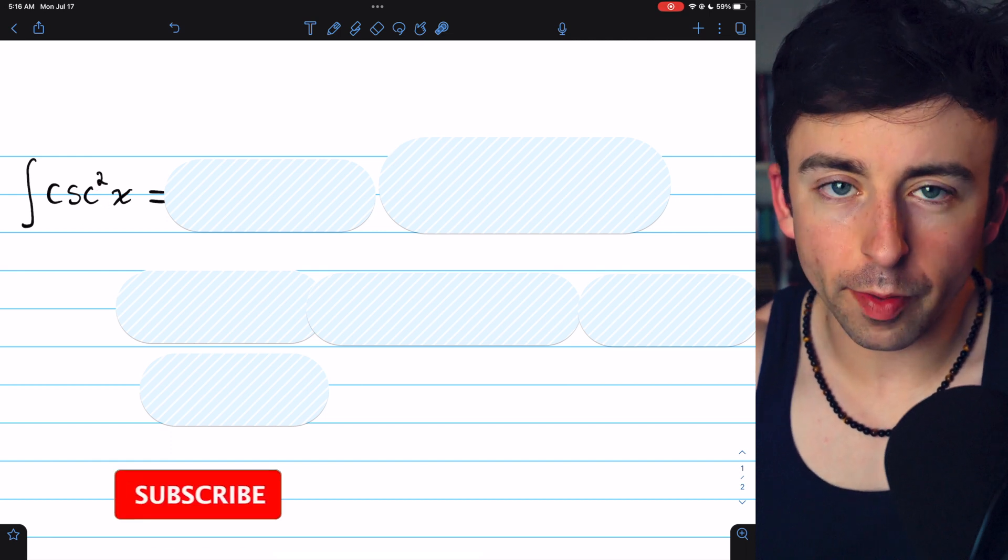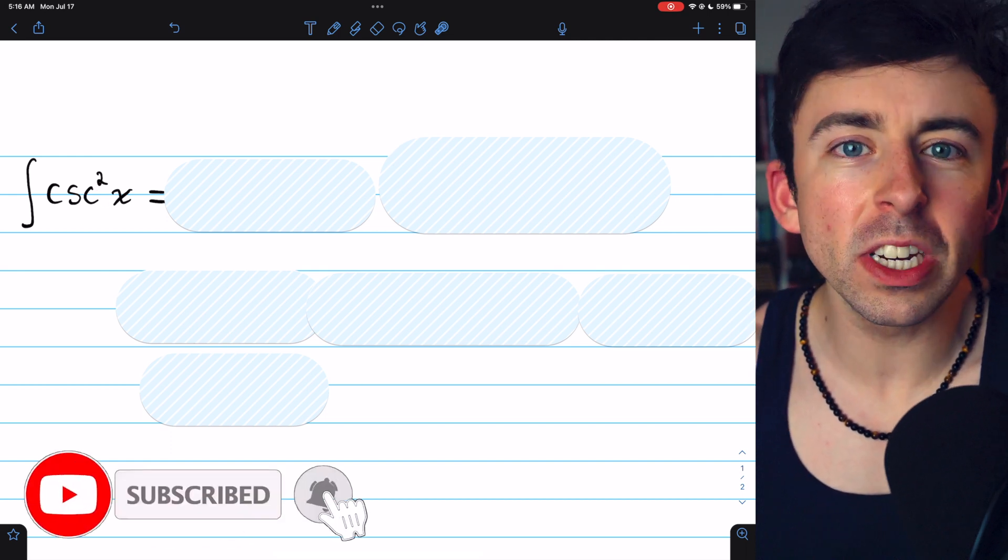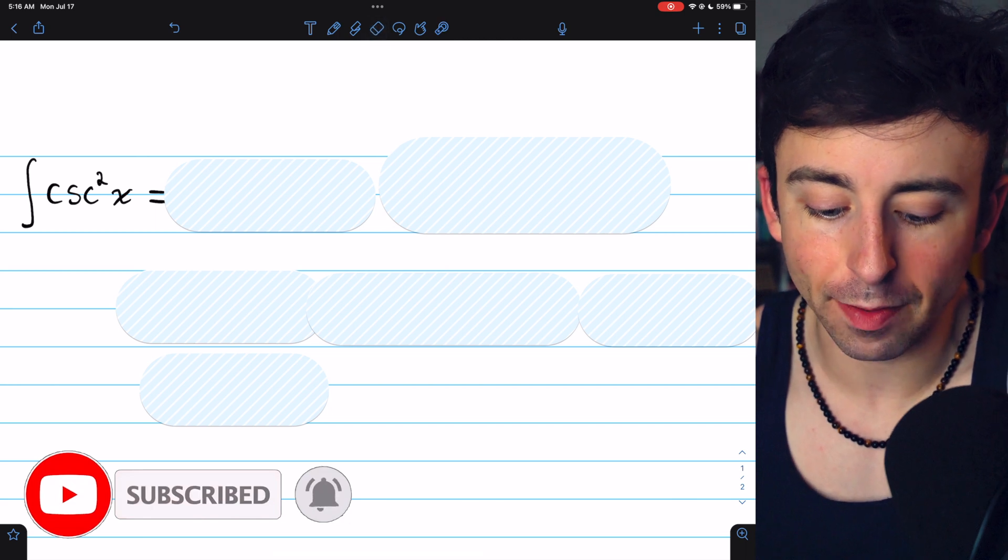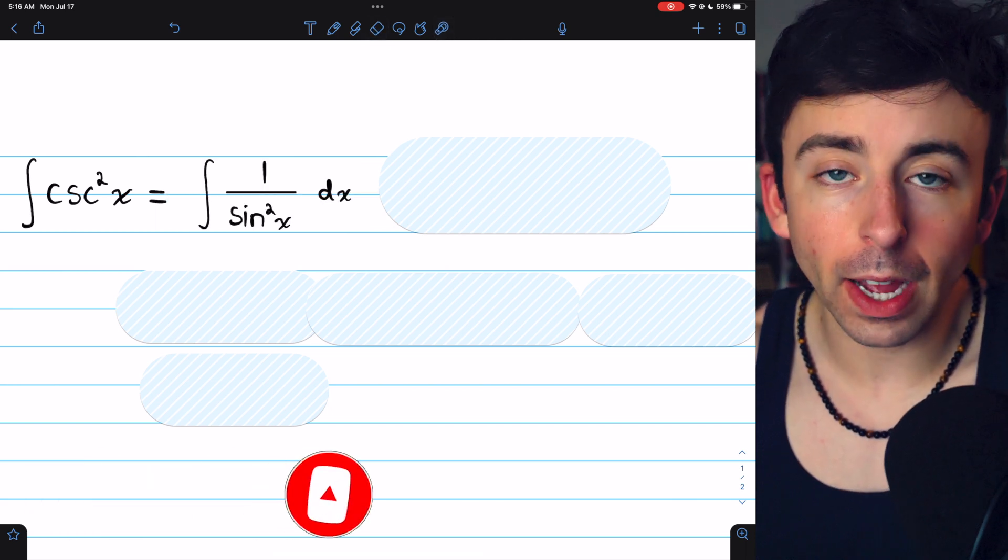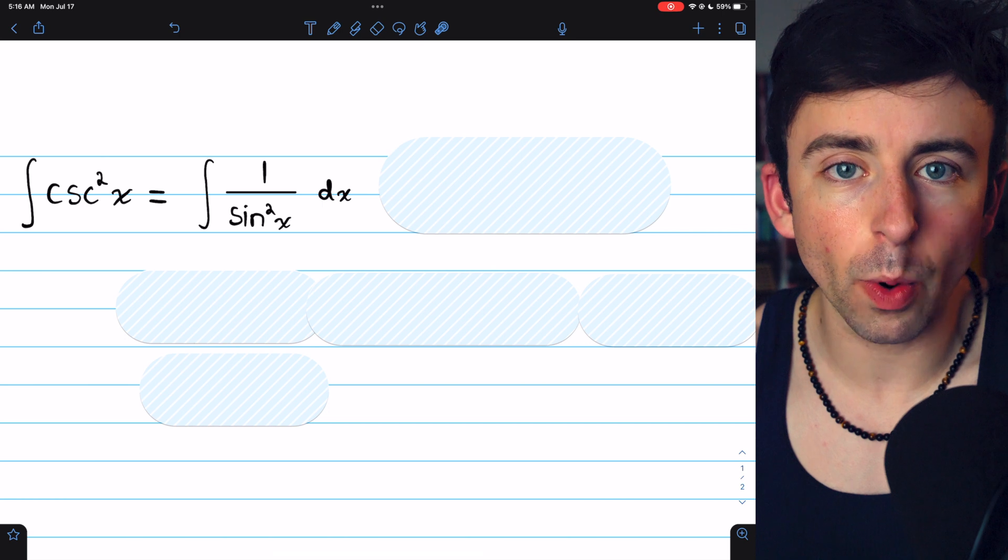Integrating cosecant squared of x is not that difficult, but we do have to be a little bit clever. Cosecant squared, by definition, is 1 over sine squared.